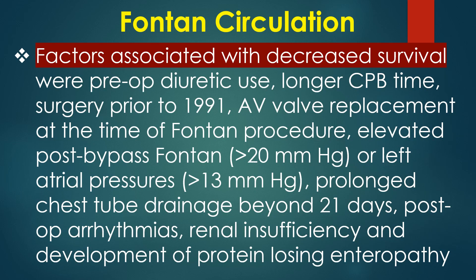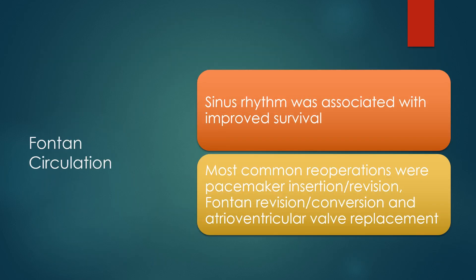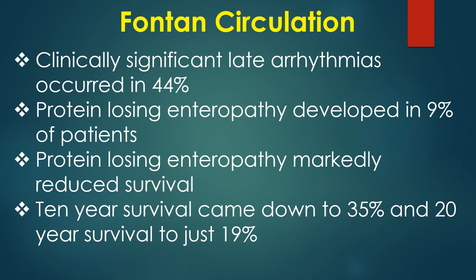Factors associated with decreased survival included preoperative diuretic use, longer cardiopulmonary bypass time, surgery prior to 1991, AV valve replacement at the time of Fontan procedure, elevated post-bypass Fontan or left atrial pressures, prolonged chest tube drainage beyond 21 days, postoperative arrhythmias, renal insufficiency, and development of protein-losing enteropathy. Sinus rhythm was associated with improved survival. Most common reoperations were pacemaker insertion or revision, Fontan revision or conversion, and AV valve replacements. Clinically significant late arrhythmias occurred in 44% and protein-losing enteropathy in 9% of patients.